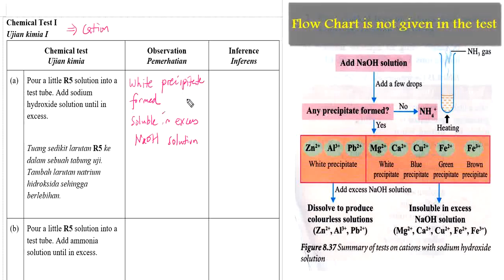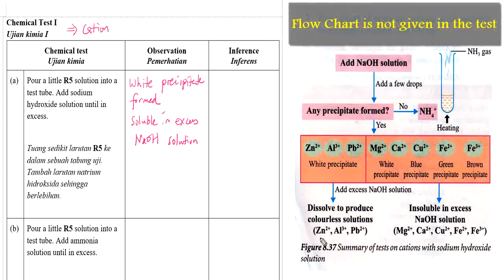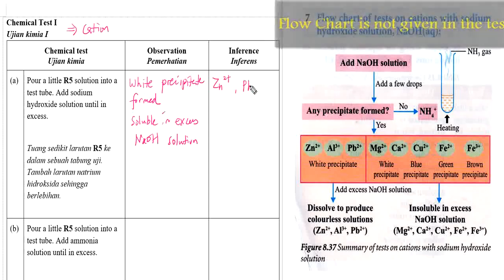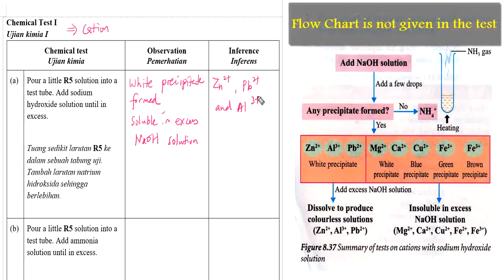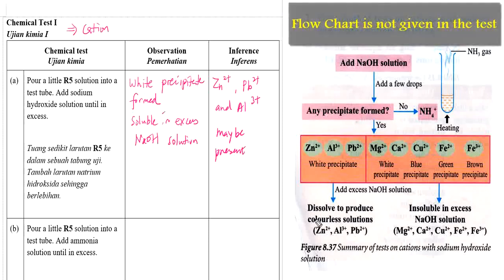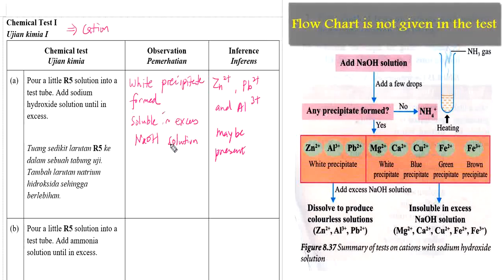You have two observations here. What is the inference? You can write down the inference: zinc ions, lead ions, and aluminum ions may be present. Because you are not sure which one is actually present based on the observations from your chemical test.